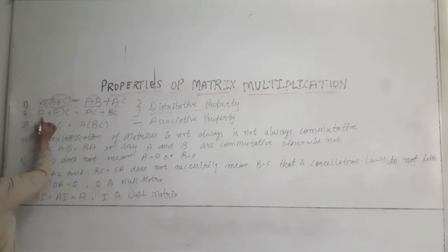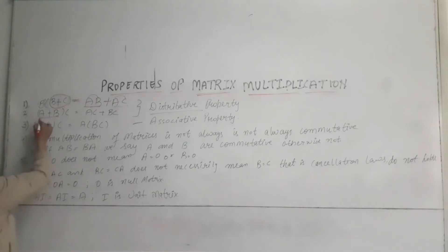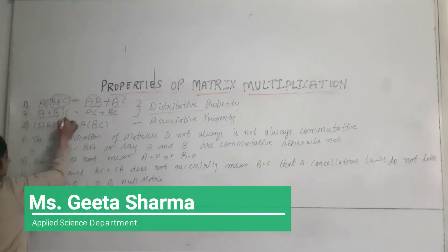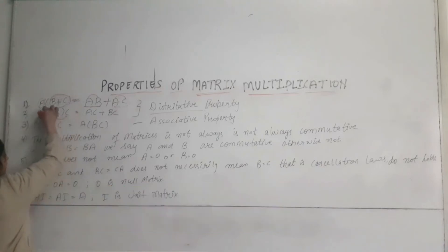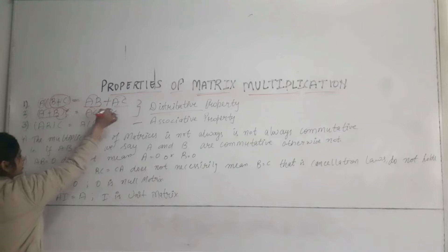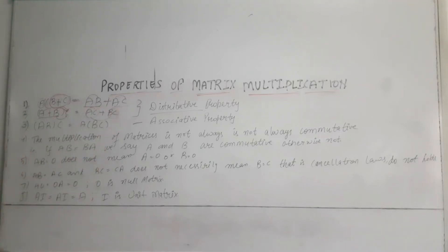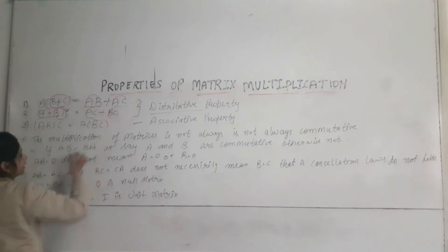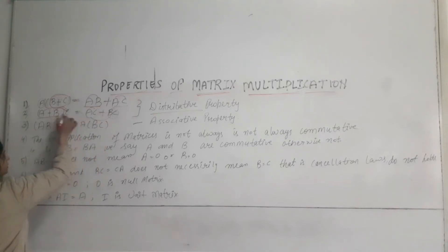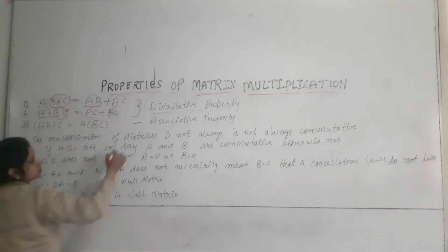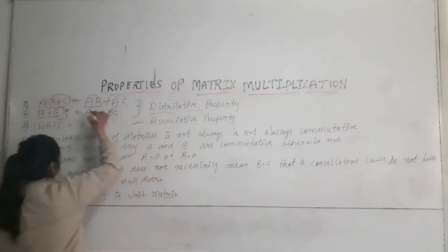In the second case, when we first add the A and B matrix and then multiply the resulting matrix by C matrix, this is equal to AC matrix plus BC matrix. When we combine them by adding, both matrices will be equal. This is also called the distributive property.